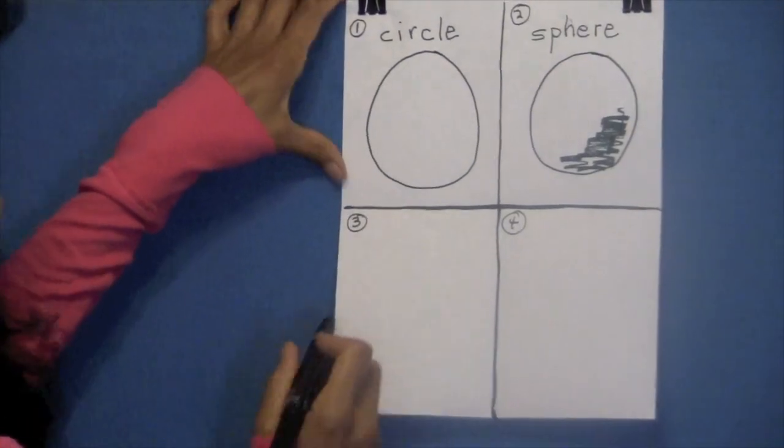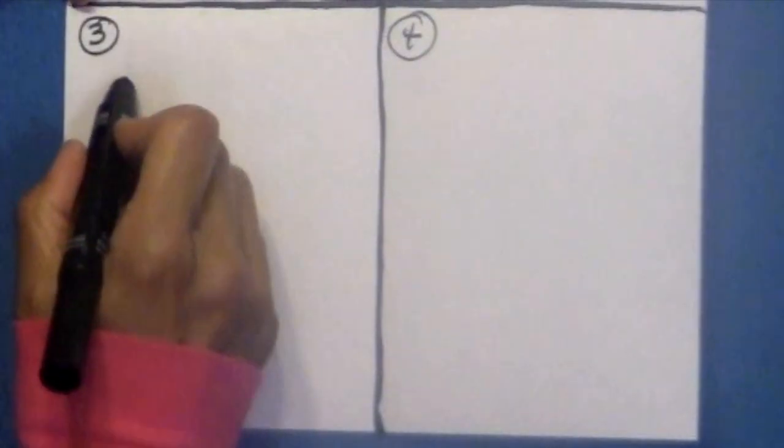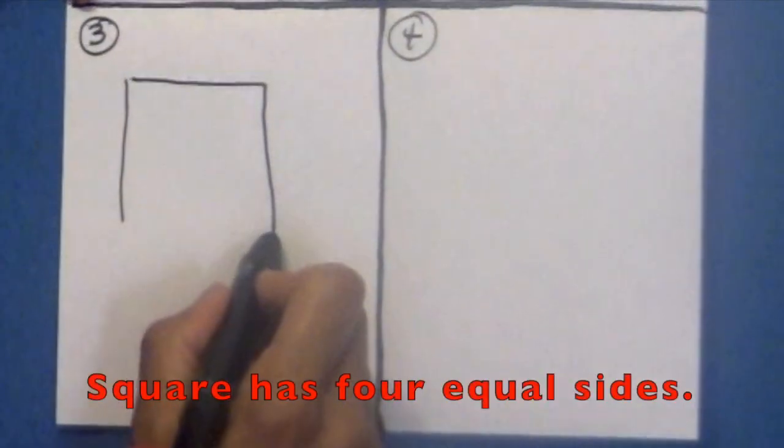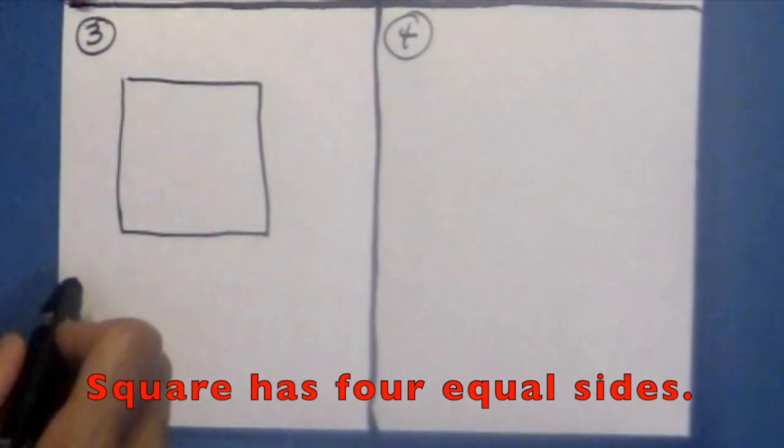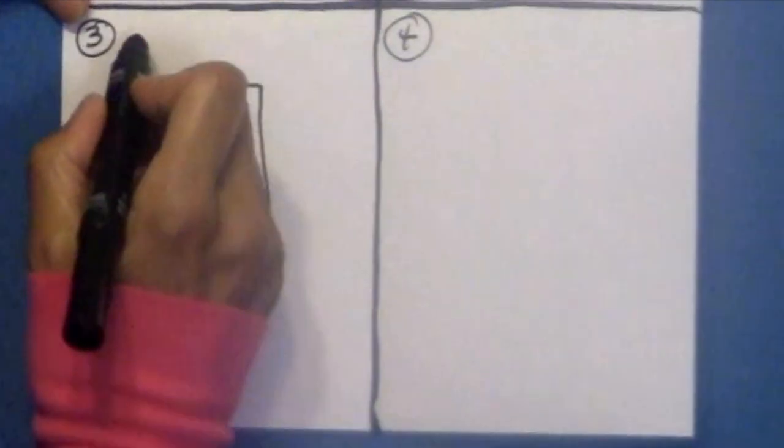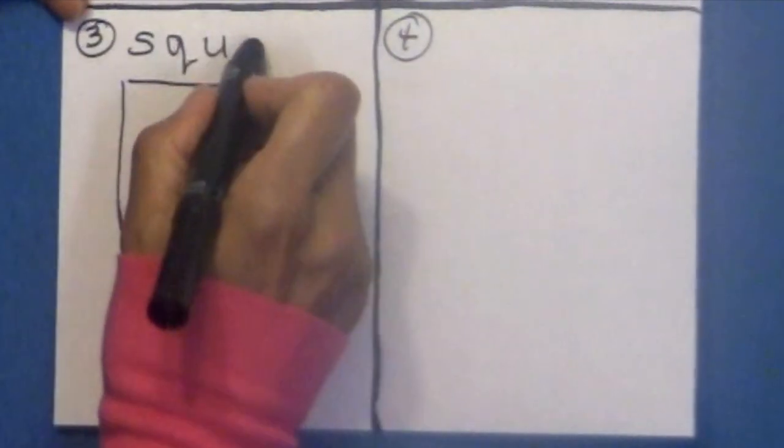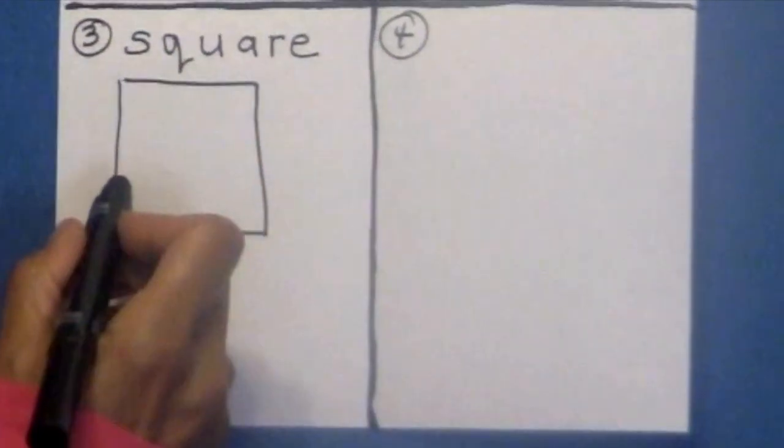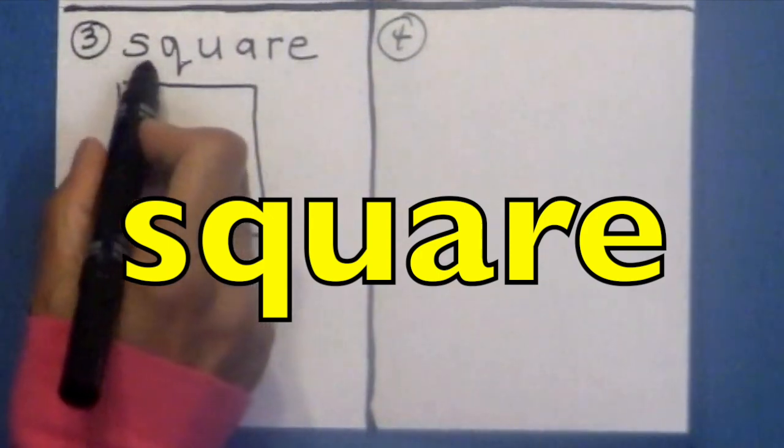All right. Let's go on to box number three. Here in box number three, we're going to draw a square. Remember a square has four equal sides. So try to get those sides as equal as possible. Now let's spell square. S-Q-U-A-R-E. And how do we pronounce this again? Square. S-Q-U-A-R-E.